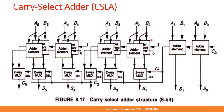To summarize: the carry select adder is divided into blocks. Each block consists of 2 adder elements with Cin as 1 and Cin as 0. Sum and carry are computed for both cases, out of which the correct sum and carry is selected by a MUX. Hence, the speed of the adder now only depends on the MUX, and the propagation of carry is eliminated, which improves the speed of the adder but increases the chip area.